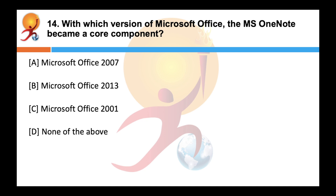With which version of Microsoft Office did MS OneNote become a core component? The correct answer is B — OneNote was initially introduced as a standalone app, but it eventually became a core component of Microsoft Office with the release of Microsoft Office 2013.